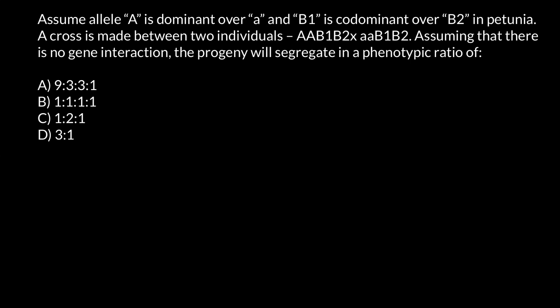Hello and welcome to Nikolai's genetics lessons. Today's problem is assume that allele A is dominant over recessive allele a and B1 is co-dominant with B2 in petunia.